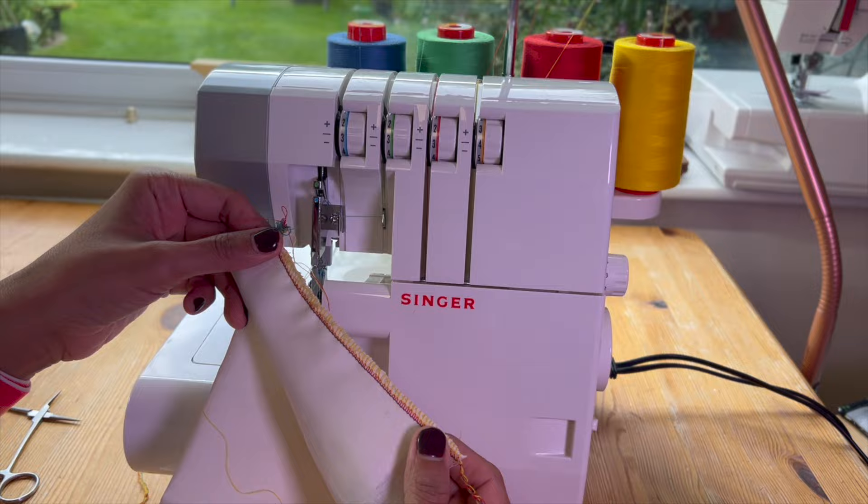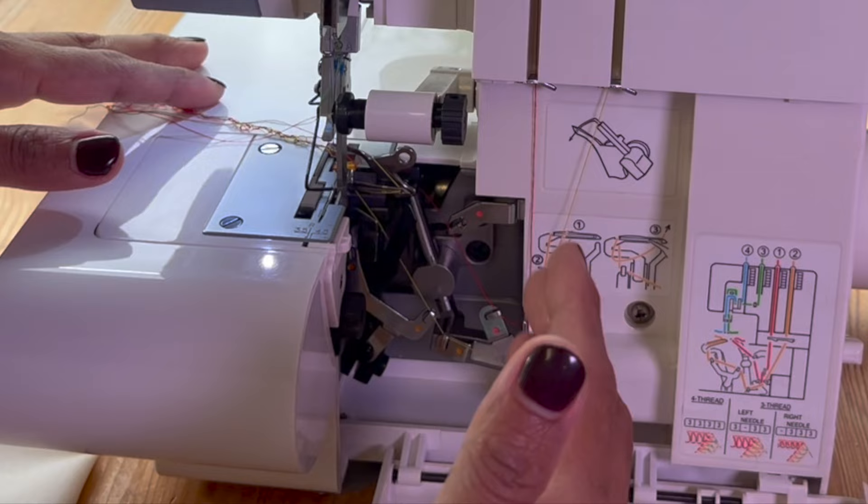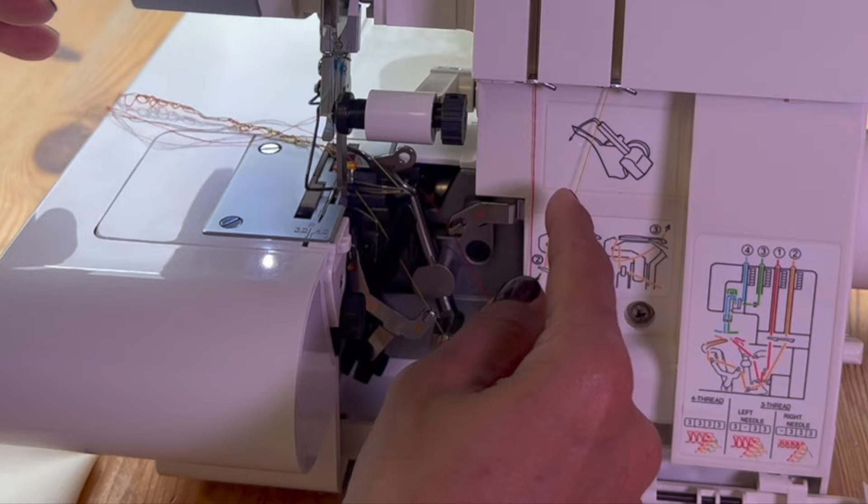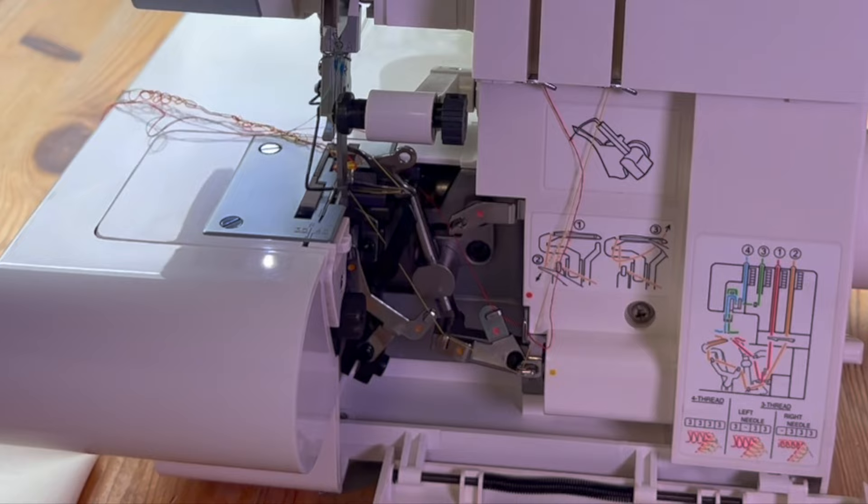So it's really important that you make sure you thread the machine properly and in sequence. If you're not comfortable doing the threading individually, then make sure if this one snaps, just cut the red one away. So that's the upper looper. Just cut it away. Just there.